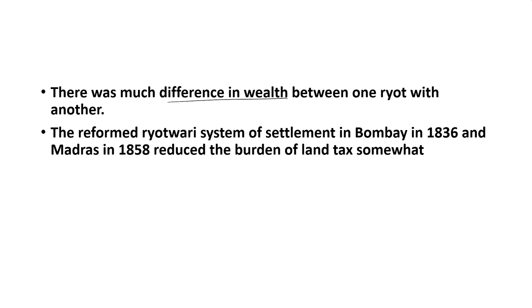A reformed system of settlement was introduced in Bombay in 1836 and in Madras in 1858. After the introduction of these reforms, the amount of land tax to be paid by the peasants was reduced. With the reduction of the land tax, the peasants got some relief from these oppressive taxation systems.